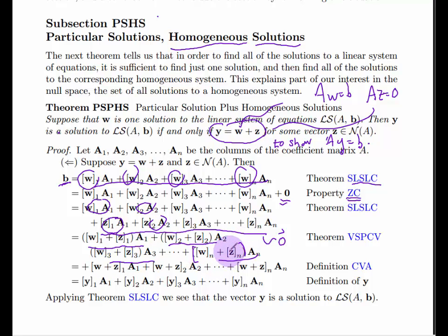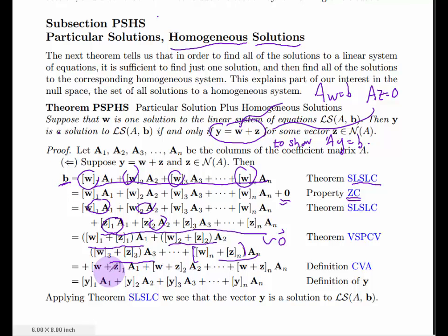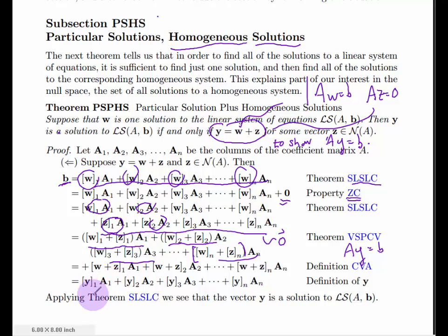Each coefficient takes the form: component of W plus component of Z. Combining these components gives the corresponding component of W plus Z — that's the definition of the sum of two vectors. What we now have is a linear combination of the columns of A that gives us B, which by definition means the vector W plus Z is a solution to AY equals B. So Y is a solution and we're done with the first direction.